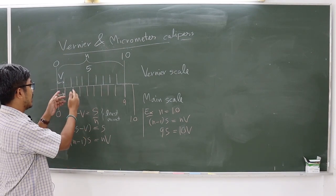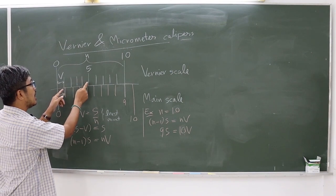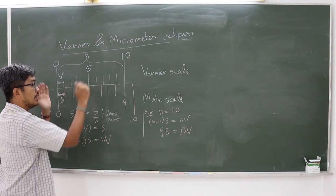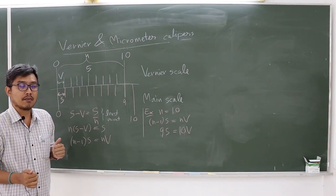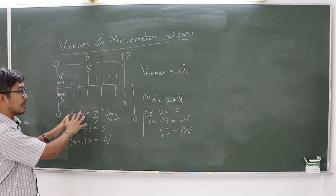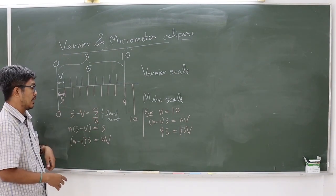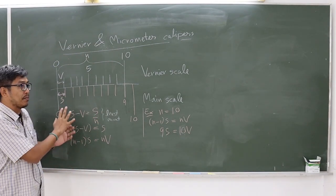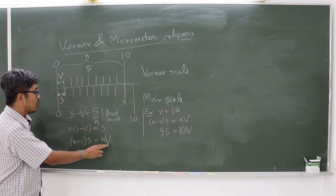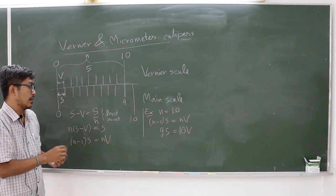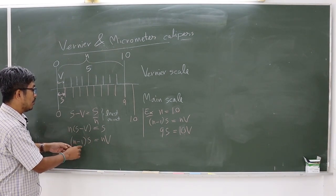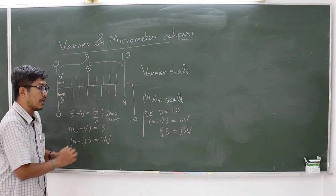Here the number of vernier scale divisions is 10 divisions, so n equals 10. If you arrange the equation, we can get the relation between the main scale S and the vernier scale V: n minus 1 times S equals n times V.